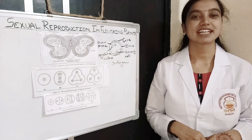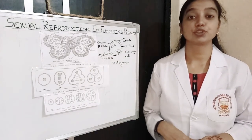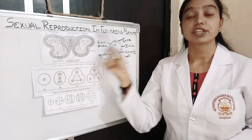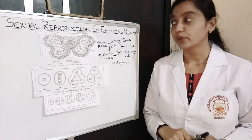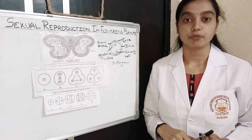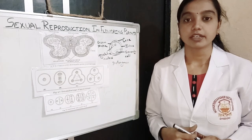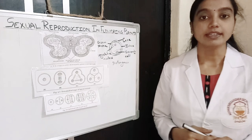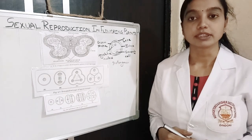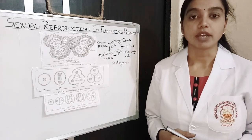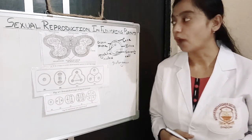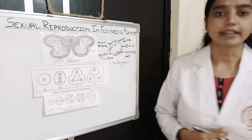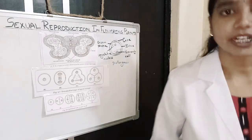Hello students, welcome once again. My sir, Joji Tevare. You are studying chapter with me, Sexual Reproduction in Flowering Plants. So we have done with the development of microsporangium. Now, in this lecture video, I am going to discuss about development of microspore — how microspores are formed. So let's focus the diagram and understand it very well.